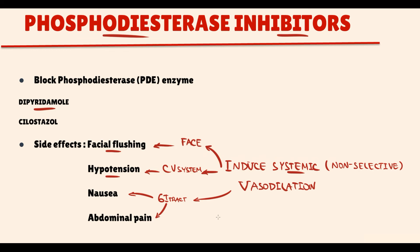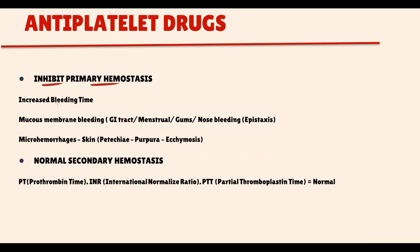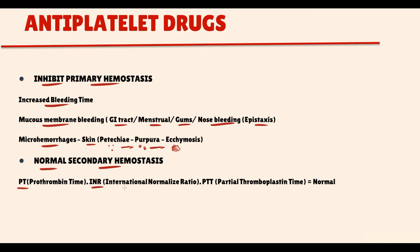Because all these antiplatelet drugs inhibit only primary hemostasis, they all increase bleeding time. This means that with overdose, they can increase the chance of mucous membrane bleeding — bleeding from the GI tract, bleeding during menstruation. They predispose to bleeding gums and nosebleeding, so-called epistaxis. Also significant inhibition of primary hemostasis can cause microhemorrhages that on the skin manifest with petechiae, purpura, and ecchymosis. But very importantly, they do not affect secondary hemostasis, and because of that, prothrombin time, international normalized ratio, and partial thromboplastin time will be completely normal.